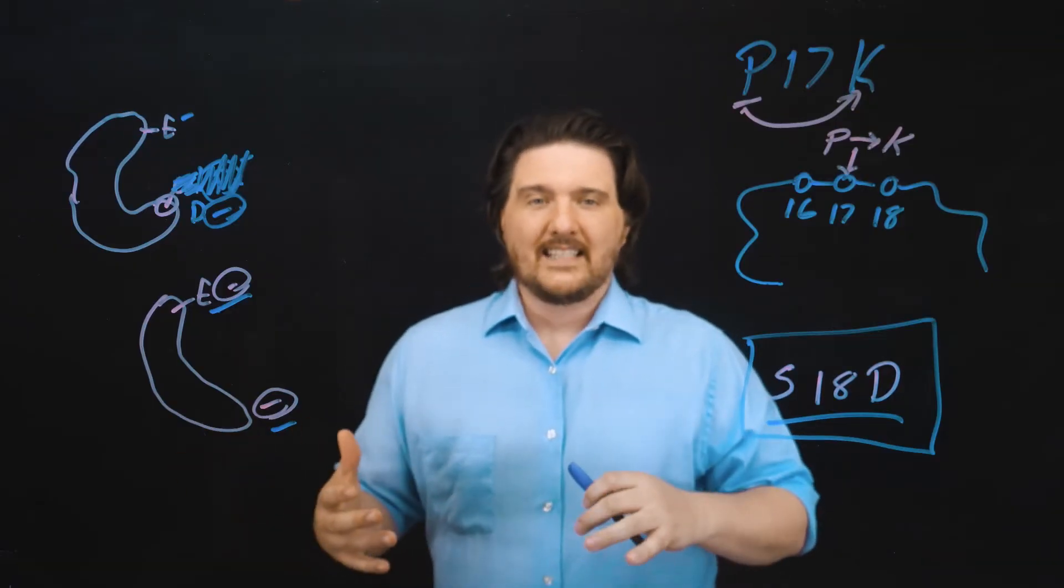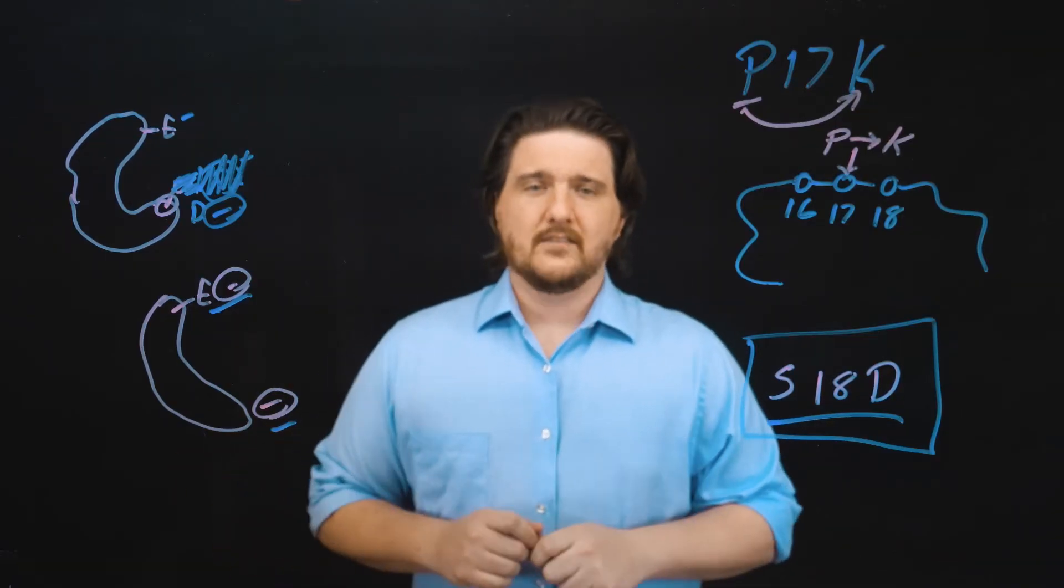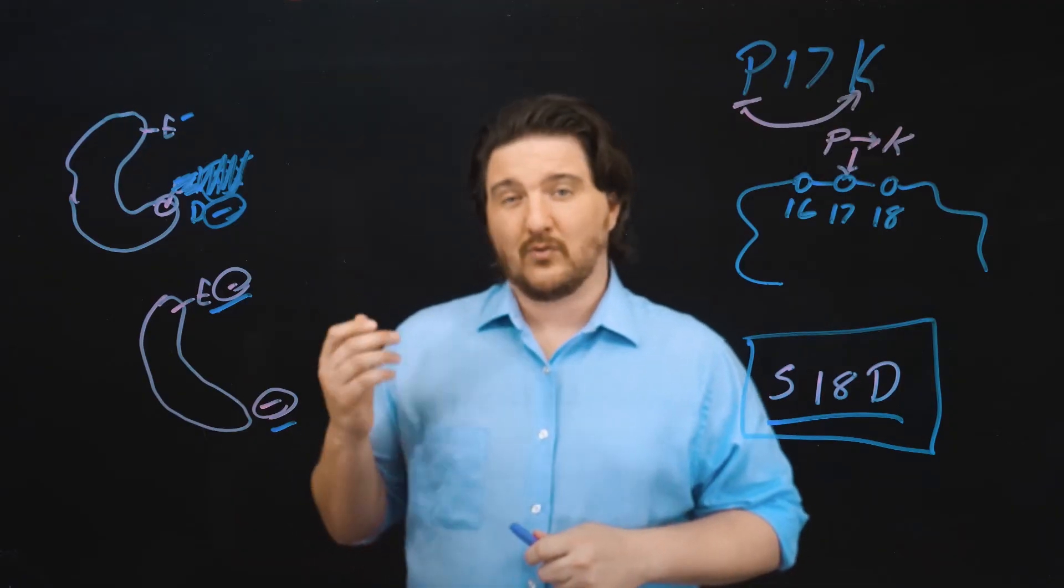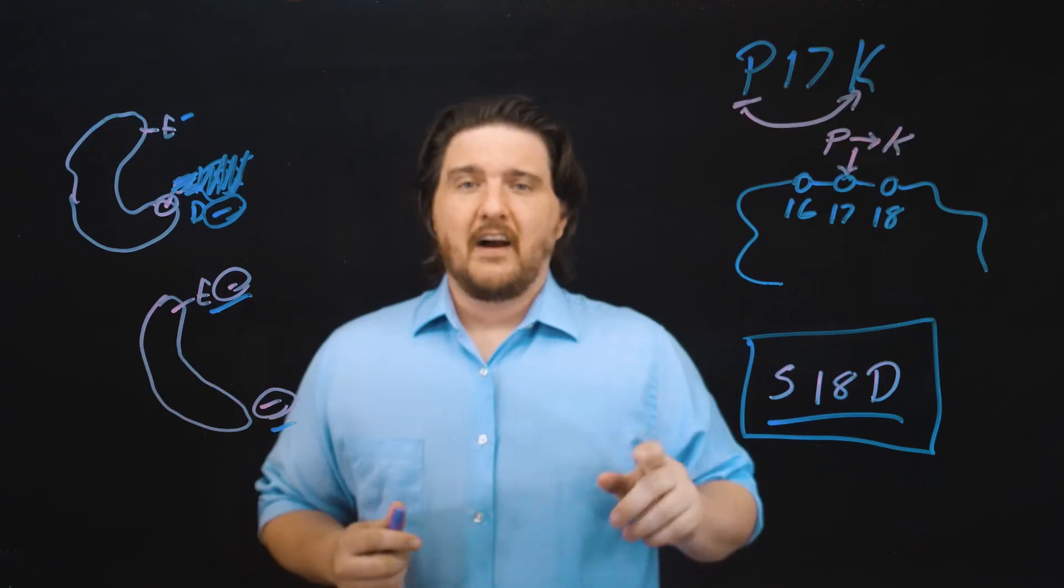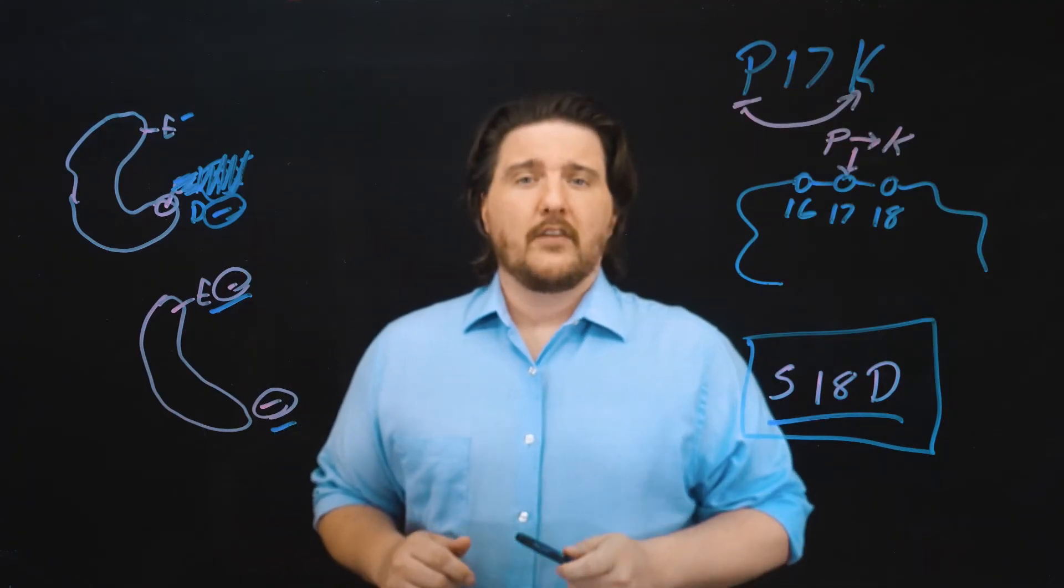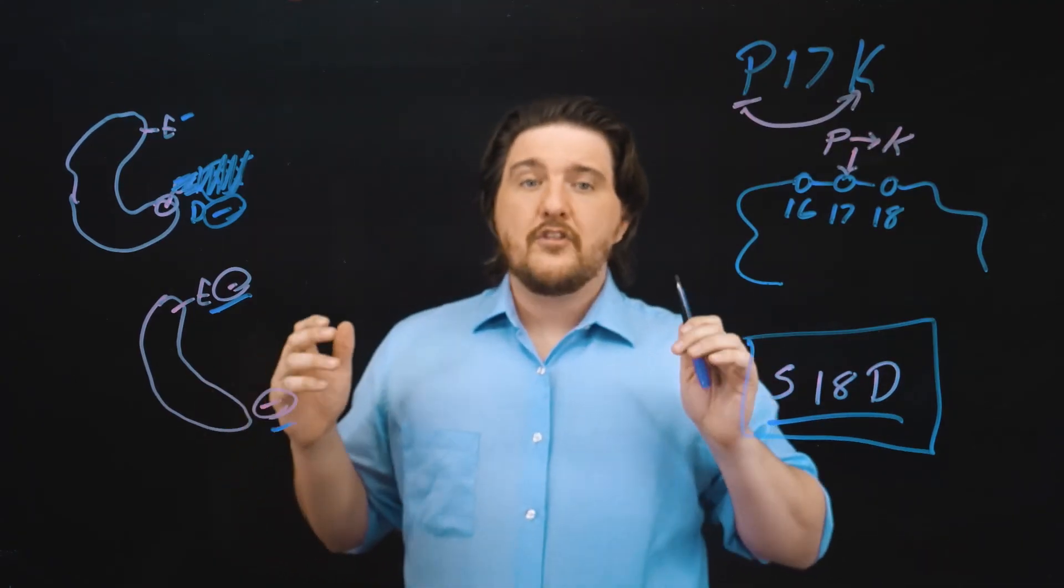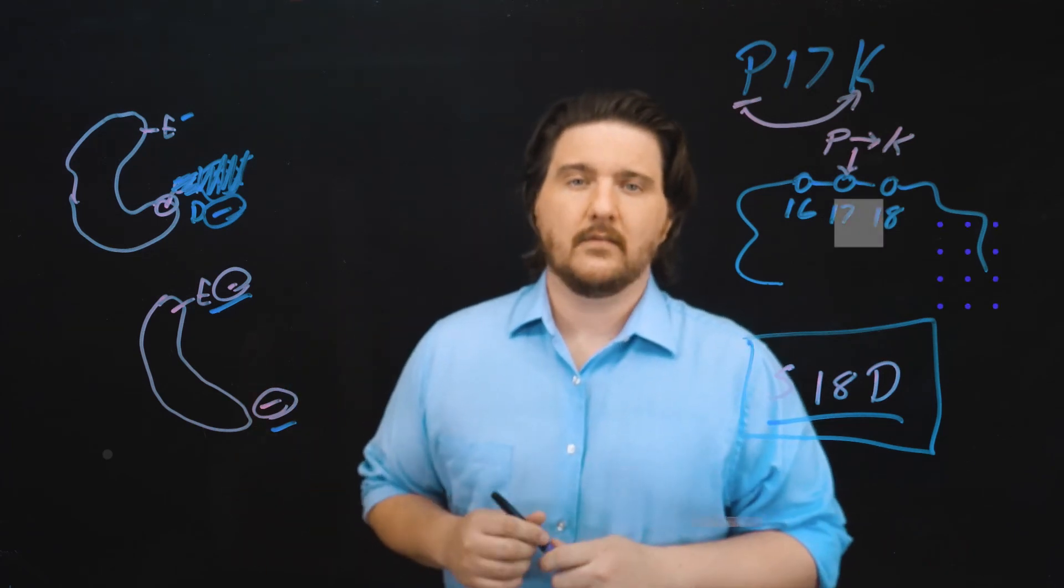So as you can see, the MCAT can test amino acids in a lot of like crazy different ways, like talking about individual mutations, strictly identifying the properties of an amino acid, or even identifying from a big structure. You need to make sure that you are ready for it because, as I mentioned, amino acids are the highest yield thing on the MCAT.